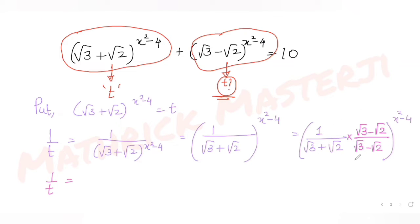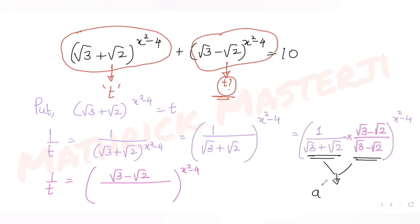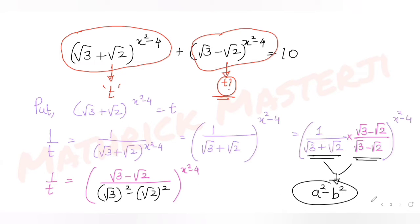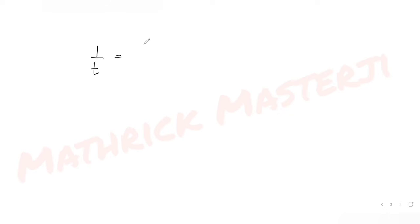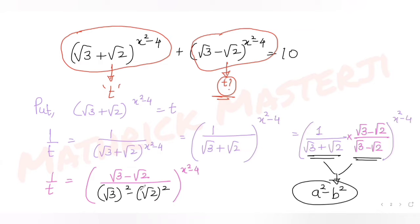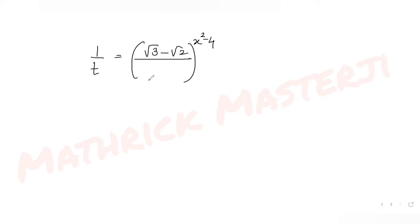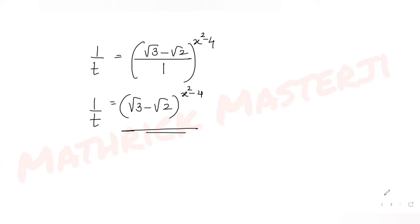So 1/t = (√3 − √2)^(x²−4) divided by (√3)² − (√2)², which is 3 − 2 = 1. Therefore 1/t = (√3 − √2)^(x²−4).